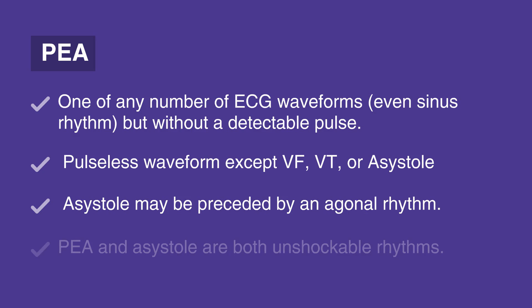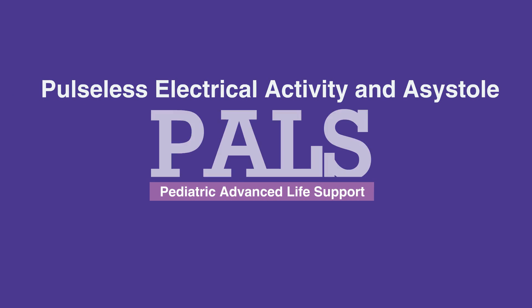PEA and asystole are both unshockable rhythms. This concludes our lesson on pulseless electrical activity and asystole. Next, we'll review ventricular fibrillation and pulseless ventricular tachycardia.